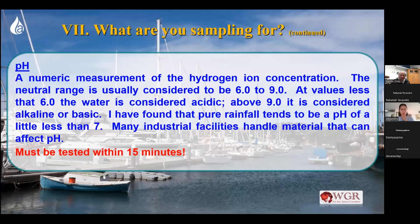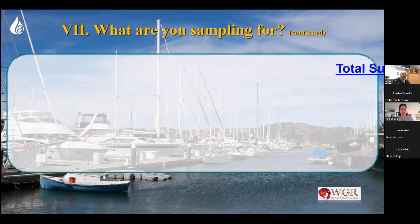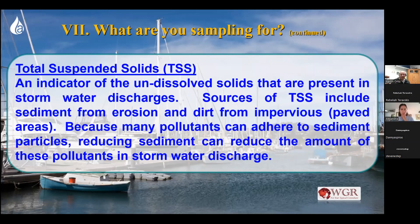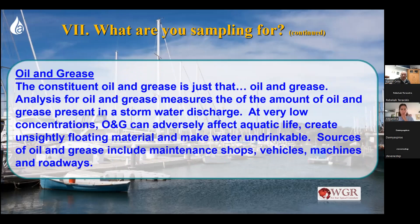So everybody has to sample for pH in water, tested within 15 minutes of collecting the sample. Everybody also has to look for total suspended solids — if you get a snow globe and shake it, you see all that stuff floating around, that's what suspended solids are. And everybody has to look for oil and grease — oil and grease is just that. So if you're under the general permit and you grab samples, at a minimum you have to grab those three things: pH, total suspended solids, and oil and grease.